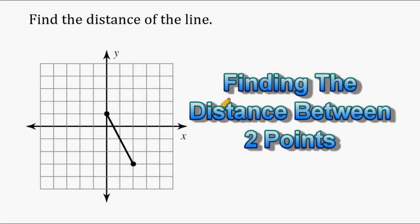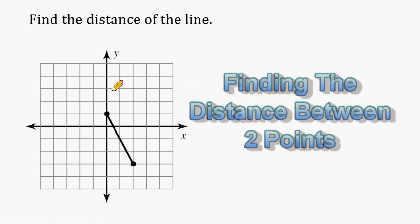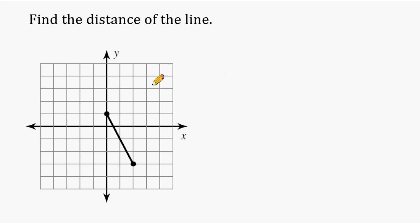Hey, this is Mr. Masonette, and what we're going to review in this tutorial is how to figure out the distance of any given line that is on a coordinate plane. Now if you had a vertical line, which is one going up and down, or a horizontal line, then you can simply just count the units that are on the graph. But whenever you have a slanted line, you have to use different techniques or strategies to figure out the distance of that line.